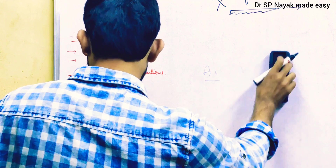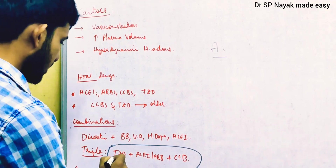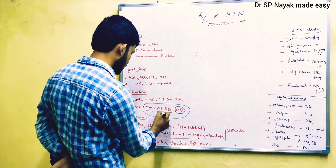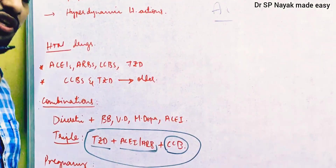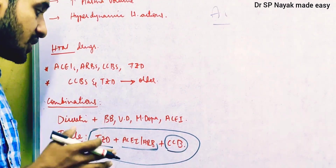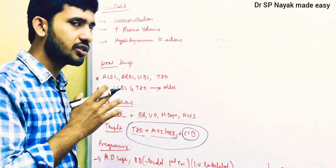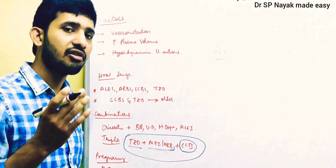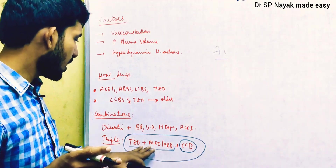Even after dual therapy is not sufficient, we start triple therapy. In triple therapy, we use thiazide diuretic plus ACE inhibitor or ARB plus calcium channel blocker. Triple therapy is the major regimen that usually treats all patients. If the patient still does not respond, they may be considered drug-resistant and could undergo hypertensive crisis, which has separate management guidelines.